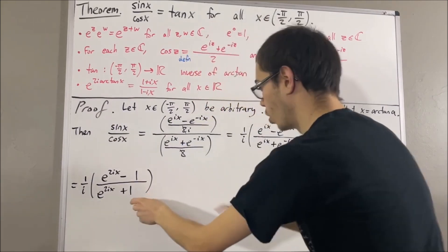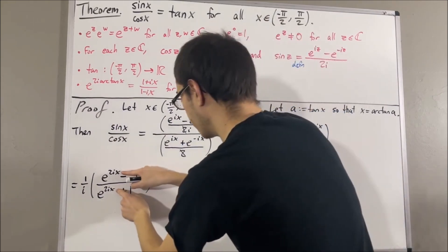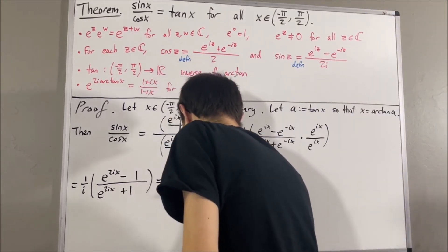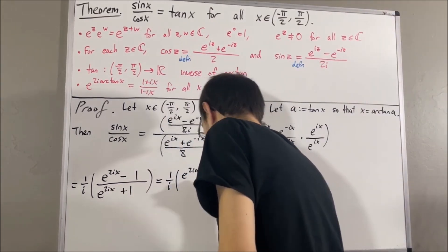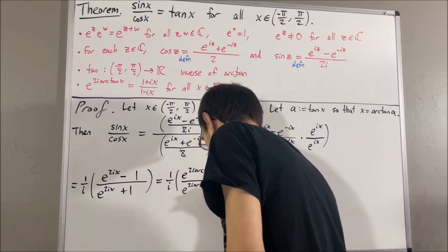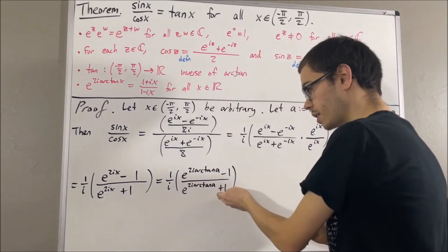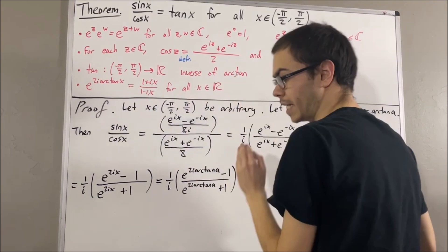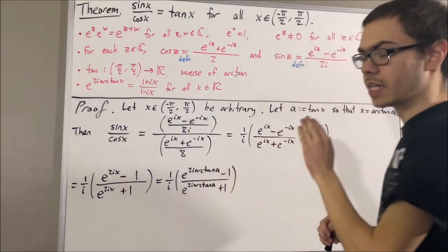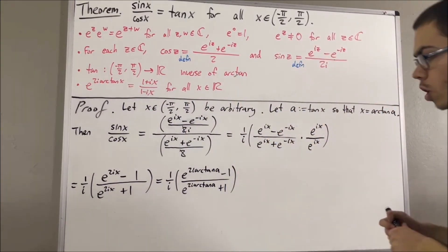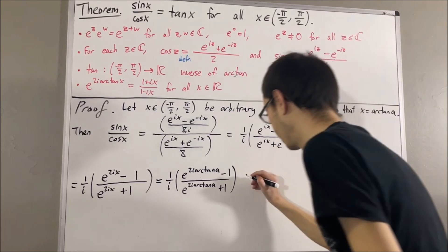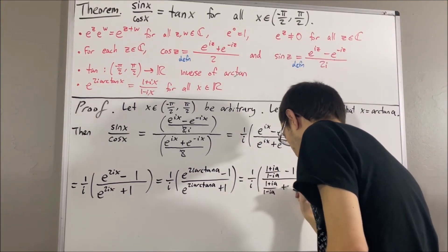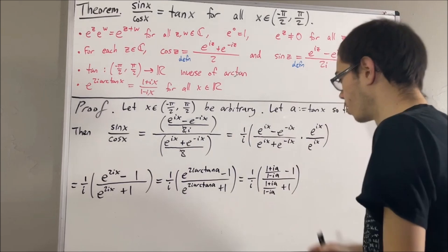Now we're going to replace x with arctangent of a. By the key result, e to the 2i arctangent a is equal to 1 plus ia over 1 minus ia. So substituting that in, we obtain that expression.